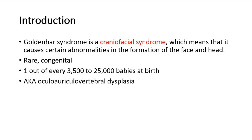It is also known as oculoauriculovertebral dysplasia. 'Oculo' means the eyes, 'auricular' is the ears, and 'vertebral' will be the spine. In people with Goldenhar Syndrome, abnormalities appear mostly in the ears, eyes, and spine. Besides these three structures, this syndrome can also affect the structure of the face and some internal organs, such as the heart or the kidneys.